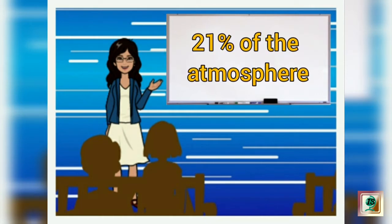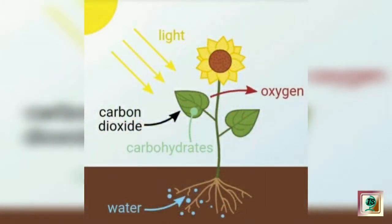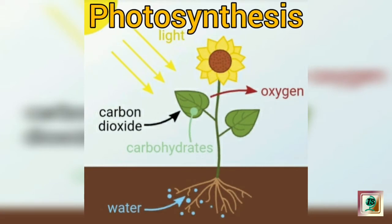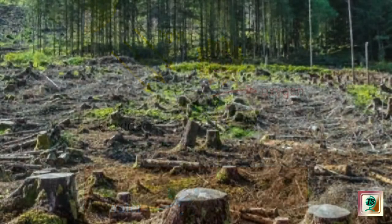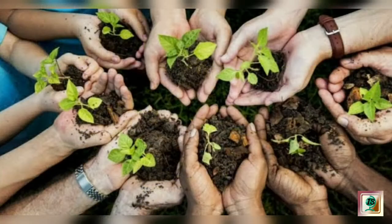Now come to the next one, that is oxygen. Oxygen makes up 21 percent of the atmosphere. It is the most important gas — all living organisms need it to survive. They breathe oxygen in the air. During photosynthesis, green plants absorb carbon dioxide and release oxygen. This process helps to maintain the level of oxygen in the air.